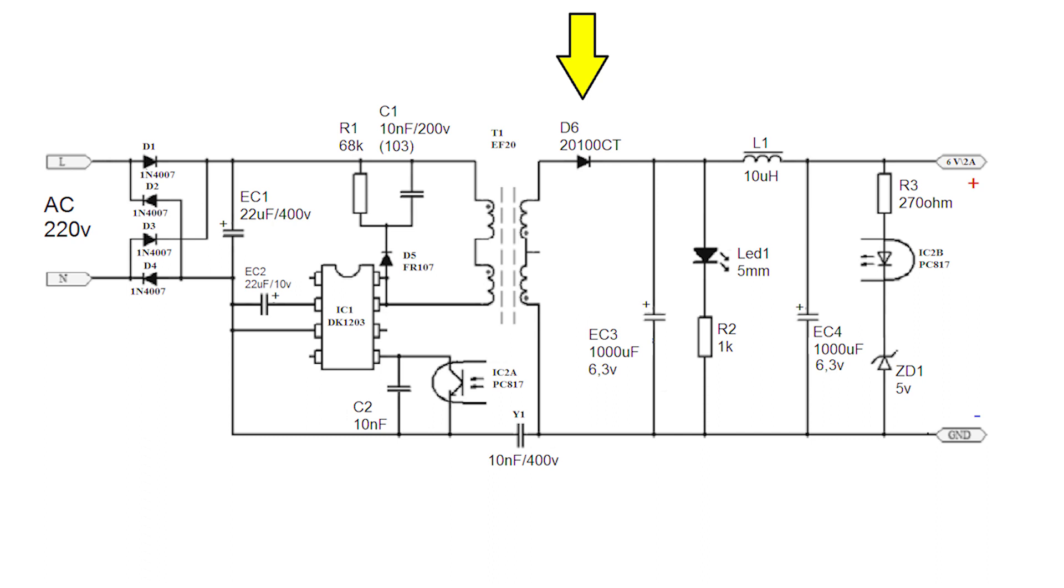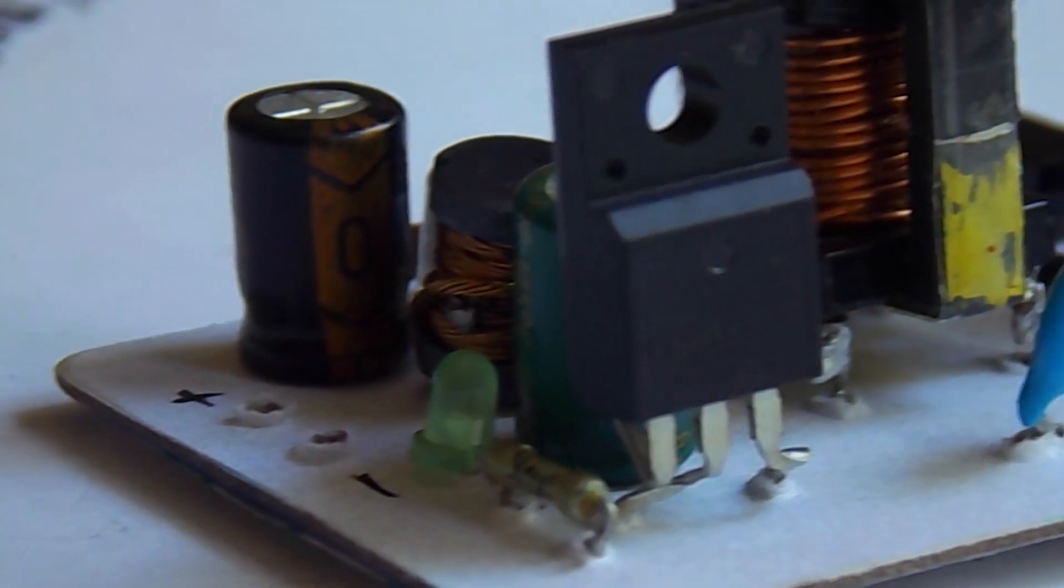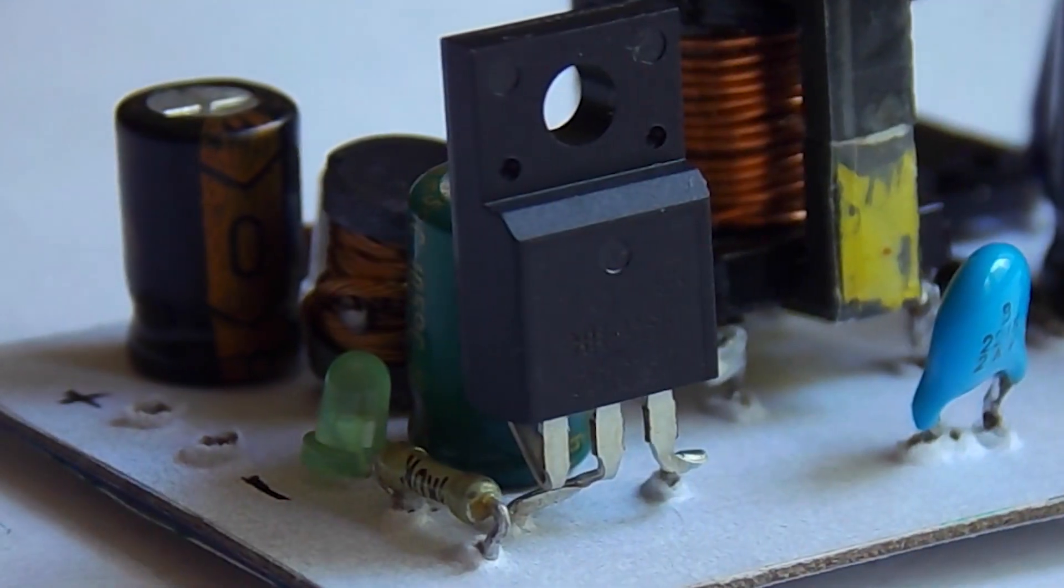Diode D6, supplied with marking 20100CT. This is a dual Schottky diode for 20A 100V. The assembly is made in the TO220 package. If necessary, you can put a radiator.